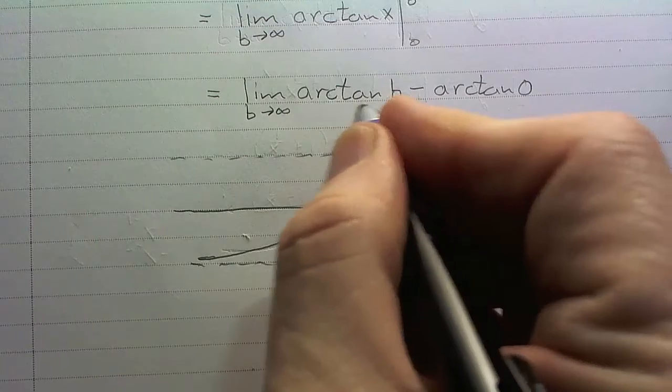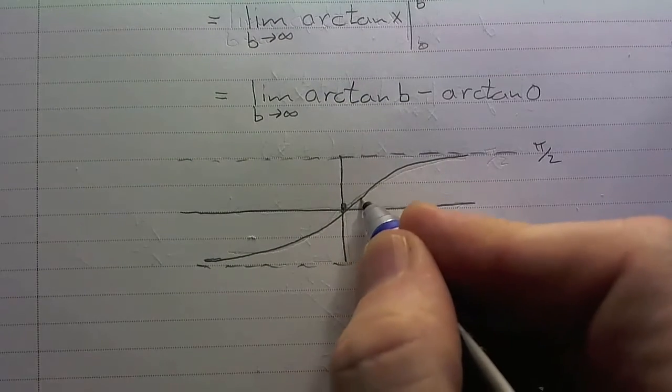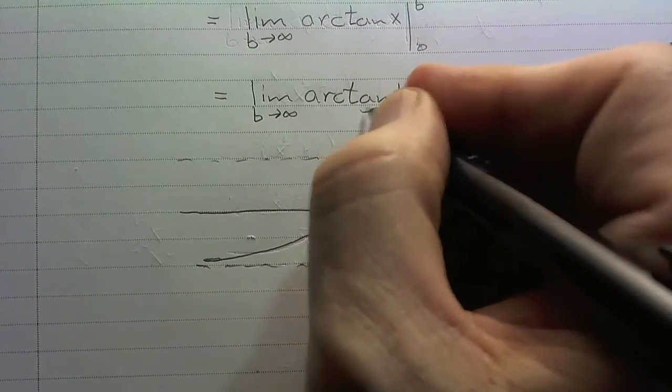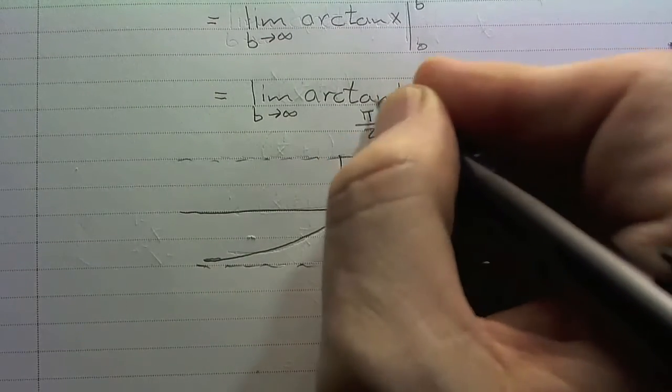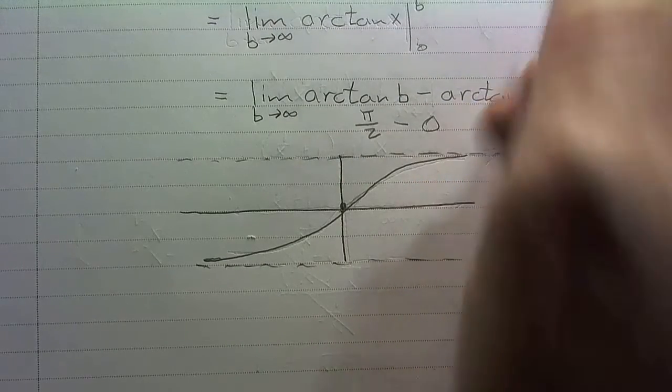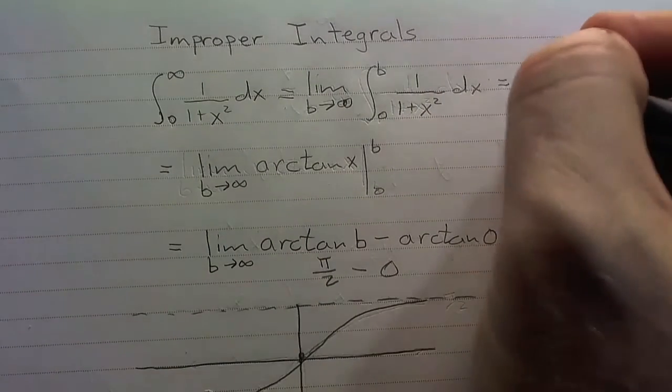Now, notice that arctan of b, as b goes to infinity – well, what arctan goes to as b goes to infinity is pi over 2. So this part is pi over 2. Arctan of 0 is 0. So this integral is pi over 2.